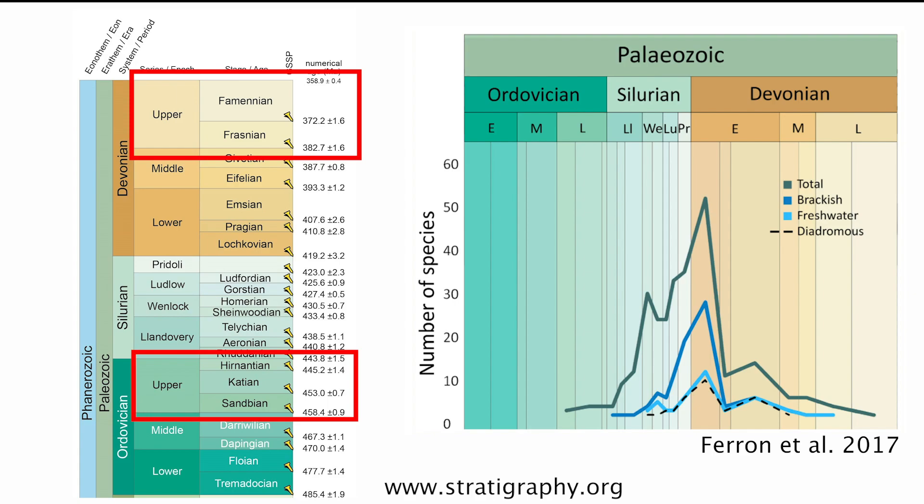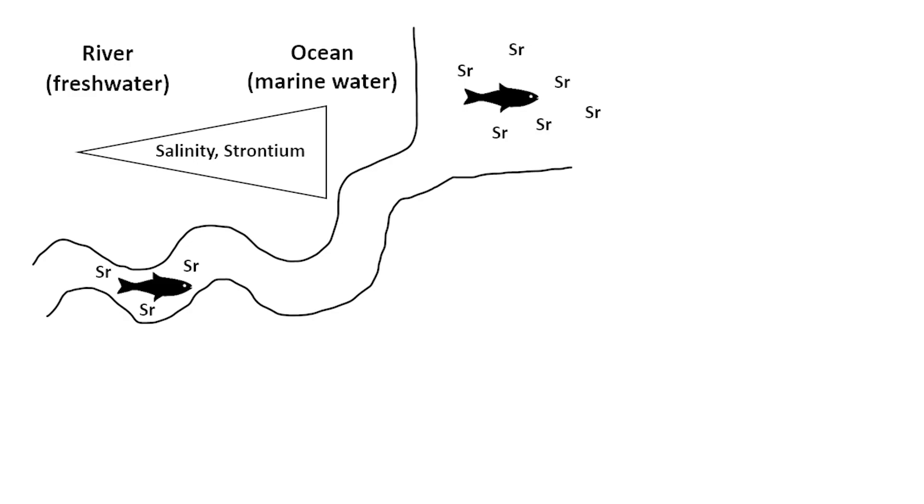Scales of some thelodonts have been found in marine as well as freshwater deposits, suggesting that they might have been diadromous.